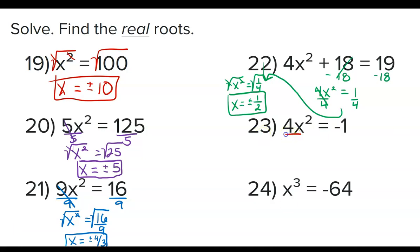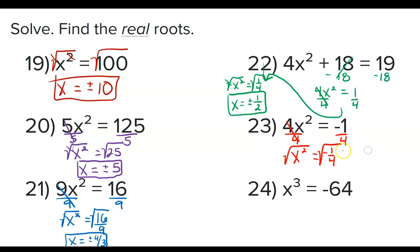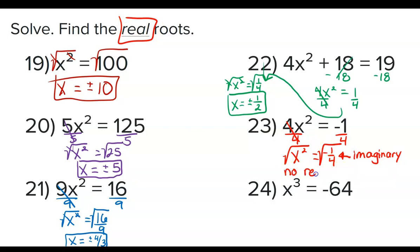Problem 23: divide both sides by 4 and we have x squared equals -1/4. To get rid of the squared, square root both sides. We are currently square rooting a negative, so this is imaginary. The directions clearly state to find the real roots, so the answer is no real roots. Anytime you are even-rooting a negative, the result is imaginary.